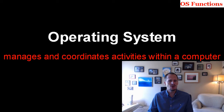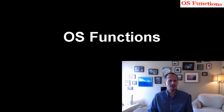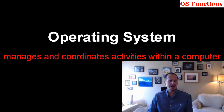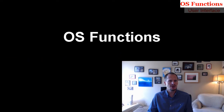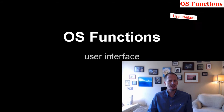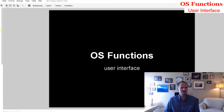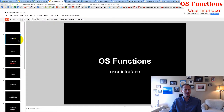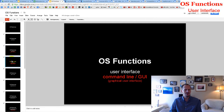So what exactly is the OS doing to manage and coordinate those activities within a computer? What are the different functions it's performing? The first function that an operating system does is it provides a user interface, and there are two types: the command line user interface and the graphical user interface.